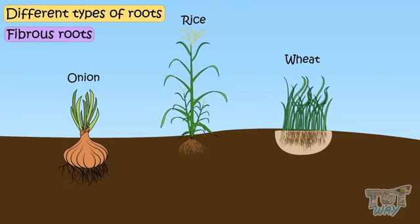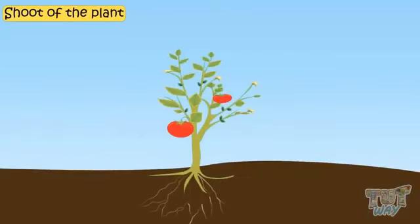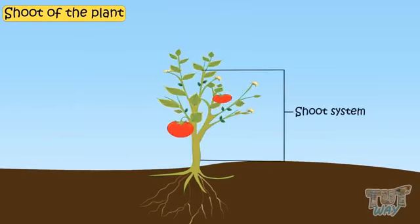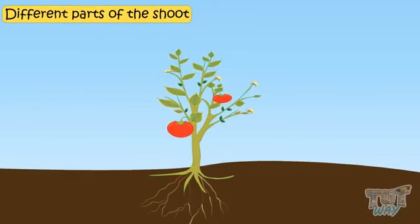Now let's learn about the shoot of the plant. Part of the plant that grows above the ground is called shoot. Now let's see different parts of the shoot.